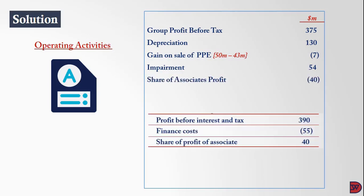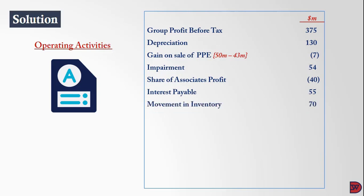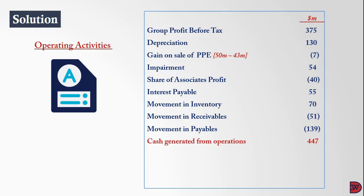The share of the associate's profits is 40 million and interest payable is 55 million. For working capital movements: there was a decrease in inventory of 70 million (add), an increase in receivables of 51 million (subtract), and a decrease in payables of 139 million (subtract). This leads to cash generated from operations of 447 million dollars.